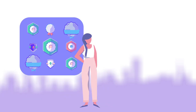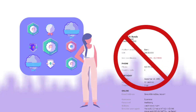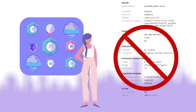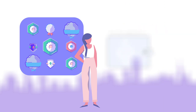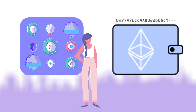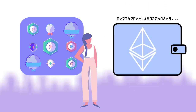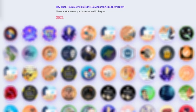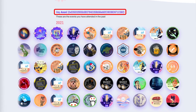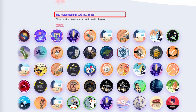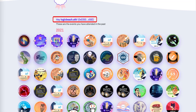A POAP collection is a digital representation of an individual that doesn't rely on any personally identifiable information, since it only requires a pseudo-anonymous Ethereum address. While a POAP collection is anonymous if desired, it can be provably owned by a single individual.